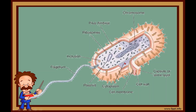Let us see the prokaryotic cell. The example is a bacterial cell. It does not have a well-defined nucleus. DNA exists as a nucleoid. A simple double-stranded circular single chromosome is present. Plasmid is present in the form of an extra circular molecule of DNA. Cell membrane is present. Membrane-bound cell organelles are absent. 70S type of ribosomes are present, which are very small compared to eukaryotic cells. Flagellum is present for locomotion.